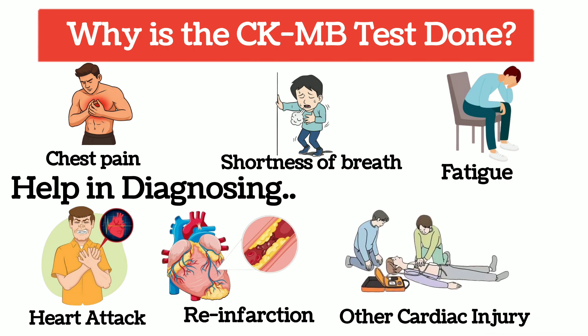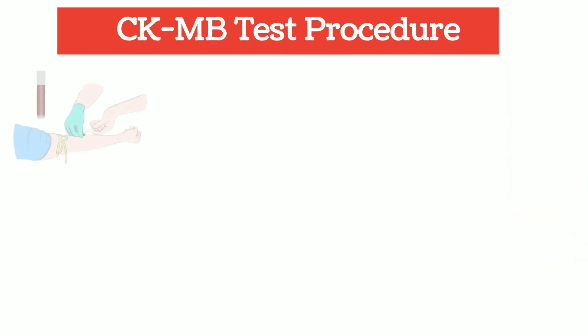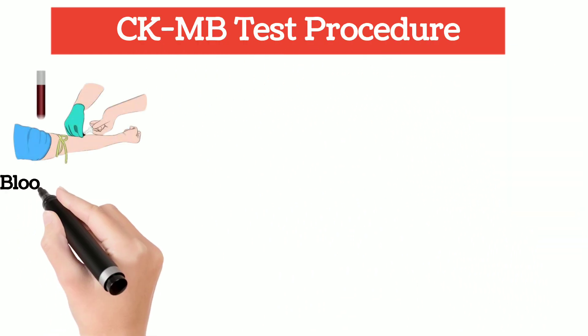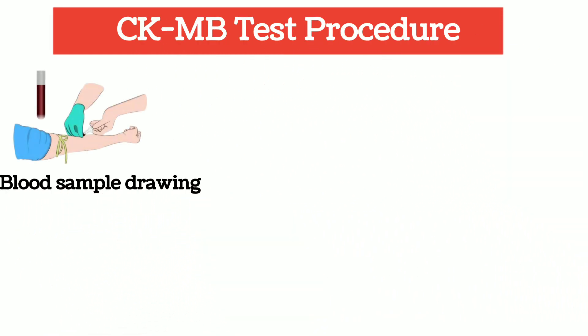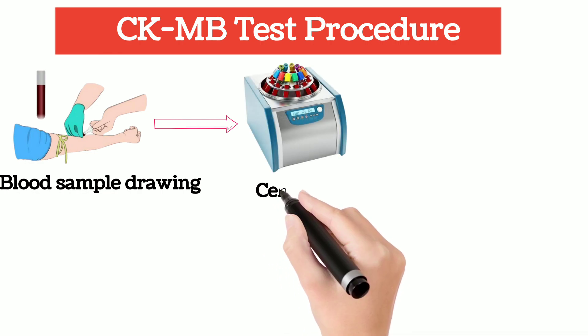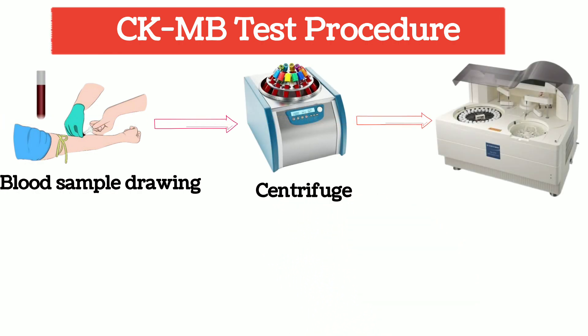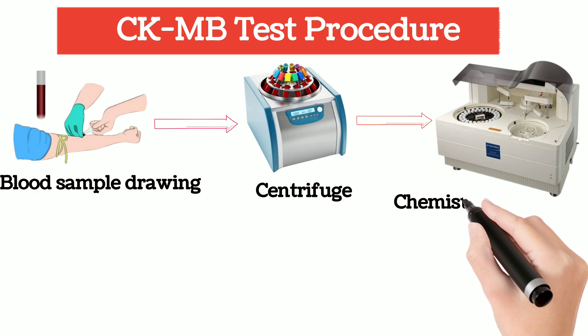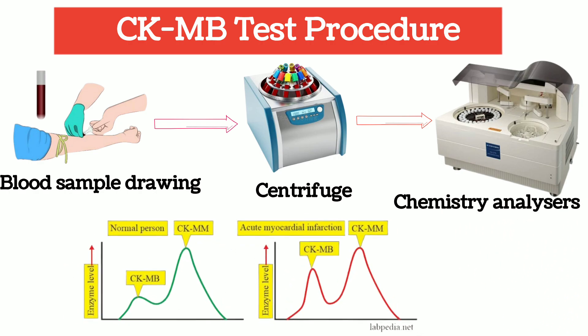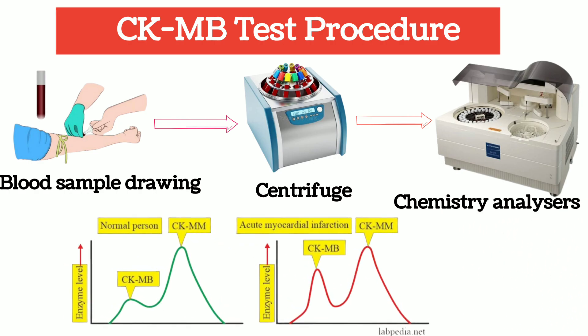Now how to do the CKMB Test. Usually a blood sample is drawn from the patient, then for serum extraction, it is added to a centrifuge, and from that serum the test is run on a chemistry analyzer. The CKMB Test might be done multiple times over several hours to track the level and check for rising and falling trends, which is crucial for accurate diagnosis.